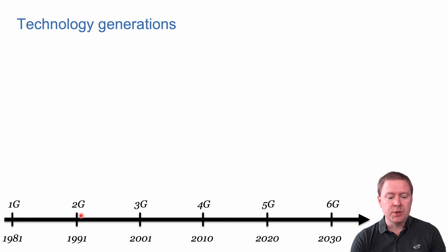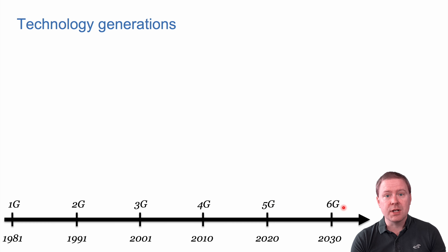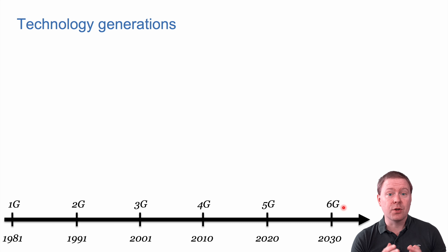We have had roughly one generation per decade: 2G in the 90s, then 3G, then 4G, and now we have 5G in this decade. We can predict that 6G will start to be deployed in 2030 and be the dominant technology of that decade.